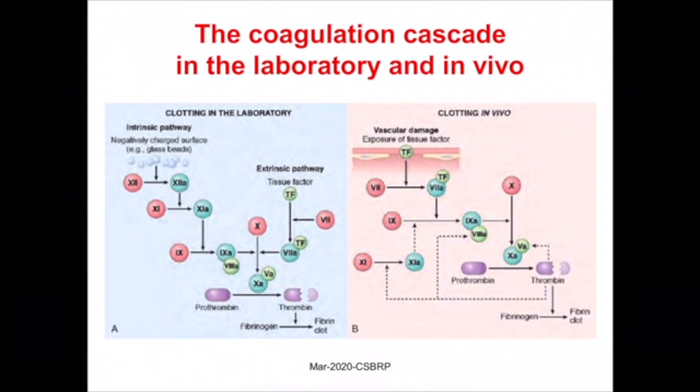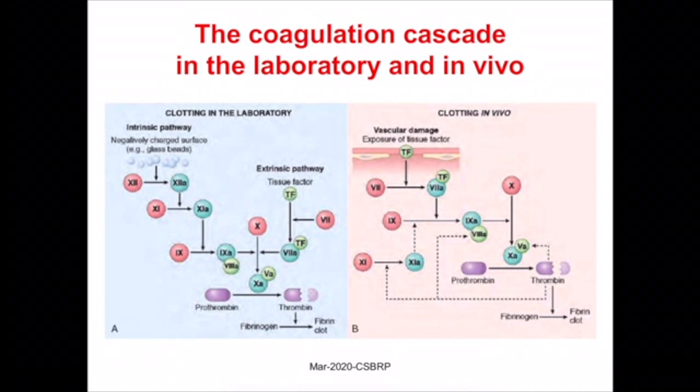The coagulation cascade is classically divided into extrinsic, intrinsic, and common pathways. Factors 12, 11, 9, and 8 form the intrinsic limb; tissue factor and factor 7 form the extrinsic pathway. Both converge on factor 10, with formation of thrombin and fibrin clot representing the common pathway. This framework helps interpret lab coagulation tests and treat patients, but in vivo, tissue factor, factor 7, and factor 9 are most important and the pathways are interlinked.